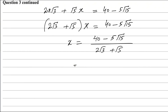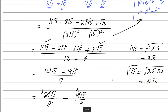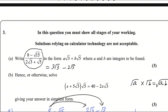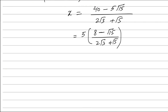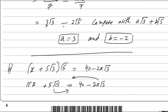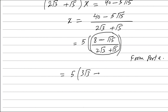Look at the numerator — 5 is common. Taking out 5 gives x equals 5 times 8 minus square root 15 over 2 square root 3 plus square root 5. This matches the expression from Part 1, which equals 3 square root 3 minus 2 square root 5. So replacing that value, x equals 5 times 3 square root 3 minus 2 square root 5, which gives 15 square root 3 minus 10 square root 5.